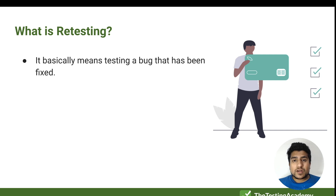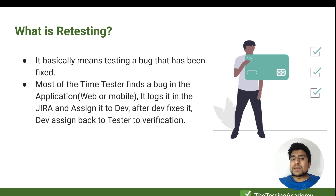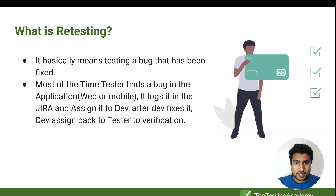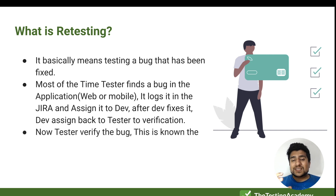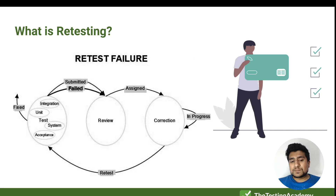So what is retesting? Basically it means testing a bug that has already been fixed. Most of the time, what happens is that a tester finds a bug and logs it into a test management tool. After that, the developer fixes it. When the developer has fixed it, you are checking whether the bug is fixed or not. This is known as retesting — the tester has to verify the bug.